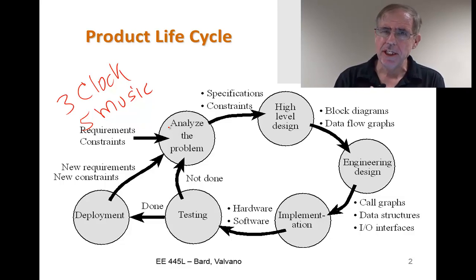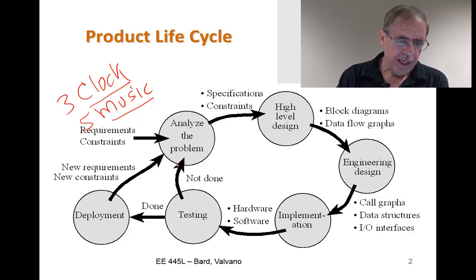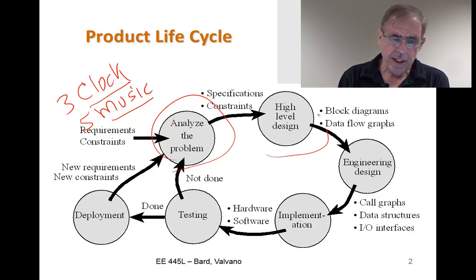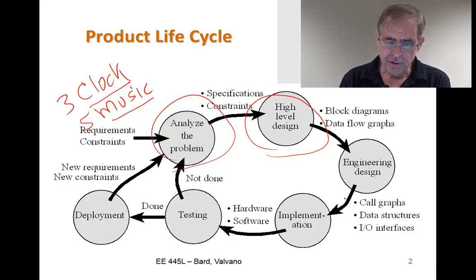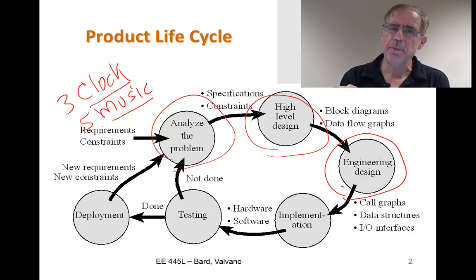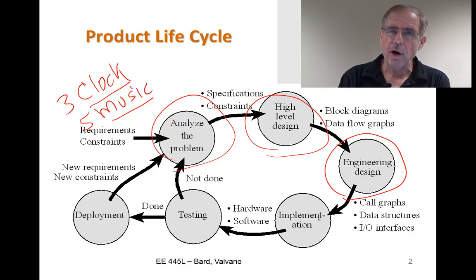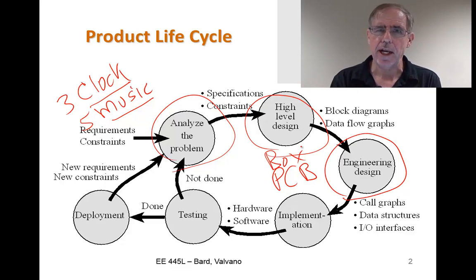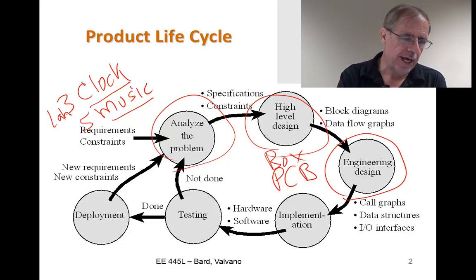And so we're going to traverse the design cycle, and as you can see, we've actually already done most of the steps of creating either an alarm clock or a music player. The problem has been given to us — that was the assignment Lab 3 or Lab 5. We had high-level data flow graphs and call graphs, all part of Labs 3 or 5, and you did a prototype using the launchpad to build up either the clock or the music player. And what we're going to do now is go through this design cycle and produce, at least on paper, a printed circuit board, and we're going to put it in a box.